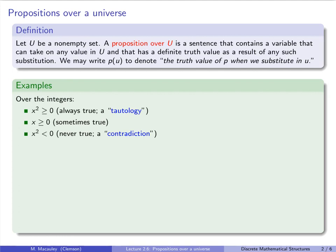Here are some examples. First, over the integers, consider the sentence x² ≥ 0. If we substitute any integer for x, this is always true. So it's not just a proposition over the integers — it is a tautology over the integers.